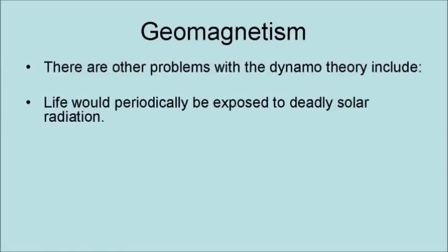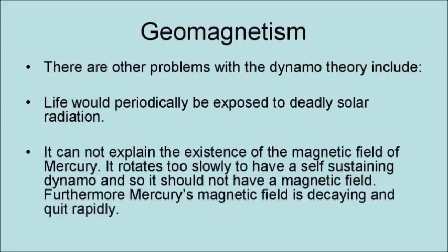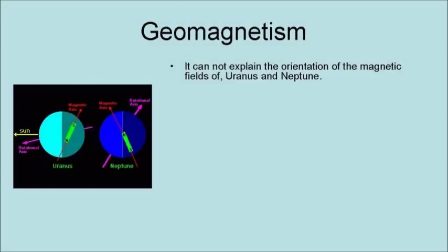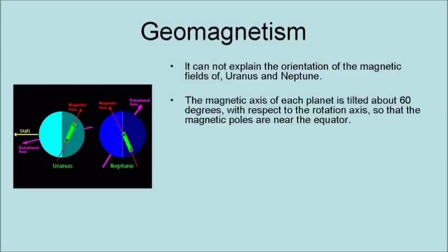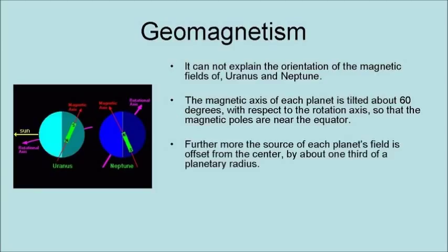There are other problems with the dynamo theory. Life would periodically be exposed to deadly solar radiation. It cannot explain the existence of the magnetic field of Mercury — Mercury rotates too slowly to have a self-sustaining dynamo and so should not have a magnetic field, and furthermore, Mercury's magnetic field is decaying quite rapidly. It cannot explain the orientation of the magnetic fields of Uranus and Neptune, whose magnetic axes are each tilted about 60 degrees with respect to the rotation axis, placing the magnetic poles nearly at the equator. Furthermore, the source of each planet's magnetic field is offset from the center by about one-third of a planetary radius. According to the dynamo theory, the magnetic and rotational axes should nearly always be closely aligned.